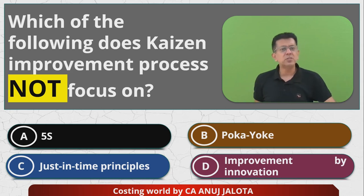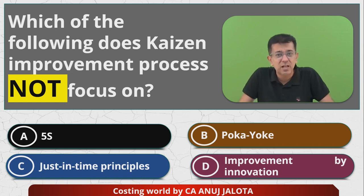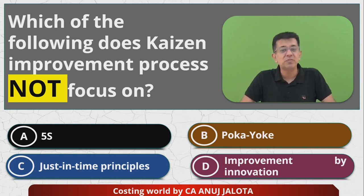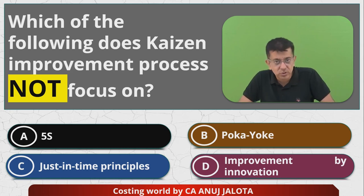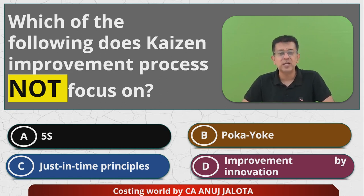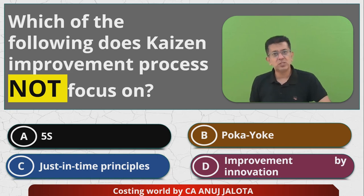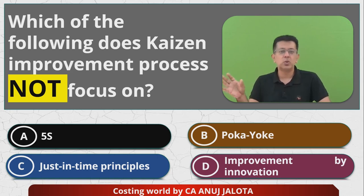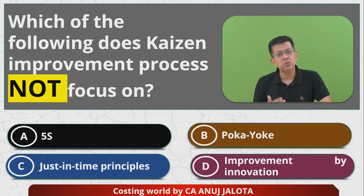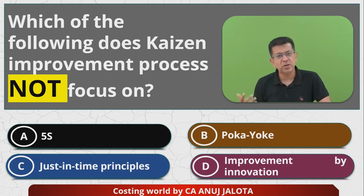Just-in-Time (JIT) principles are basically those principles that help you to reduce the amount of inventory you have. You have two forms of JIT: JIT production and JIT purchases. JIT purchases tell you to purchase raw materials only when you need them, so there are no raw material stocks. JIT production tells you to produce when the demand comes, so there will be no finished goods stock.